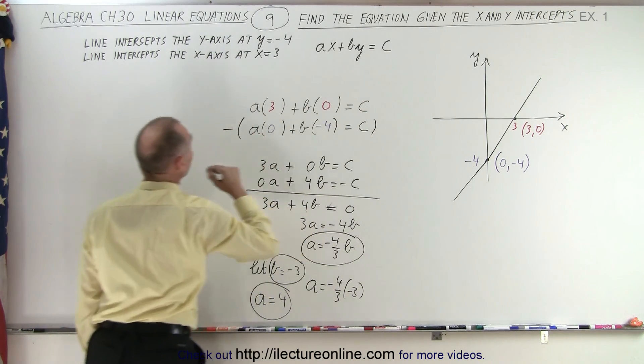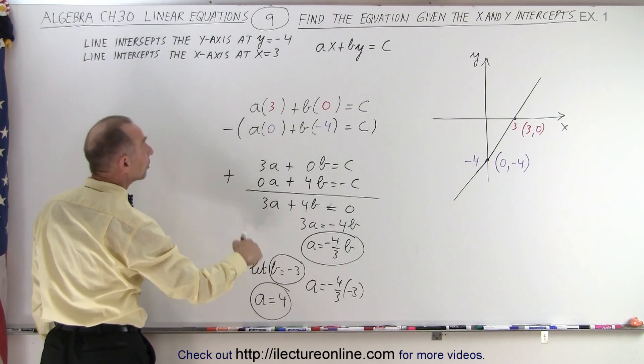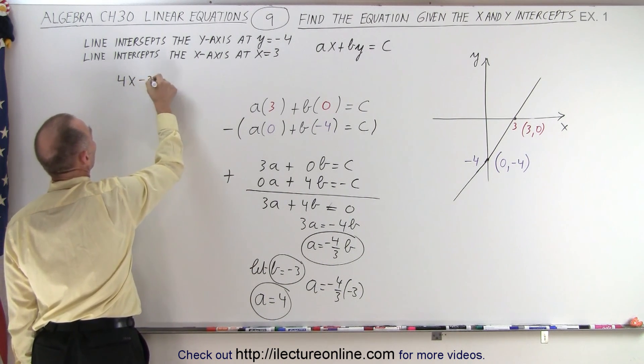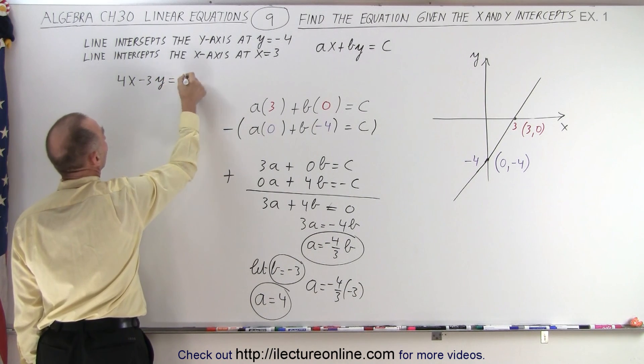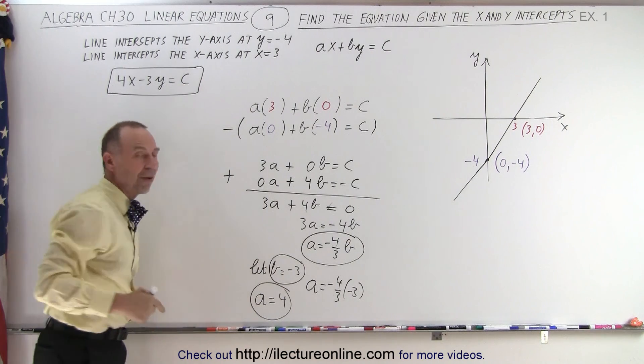And I can plug that into my equation right here. So, when a is equal to 4, b is equal to negative 3, we end up with 4x minus 3y is equal to c. So, now I have one more thing to find, which is the value c.